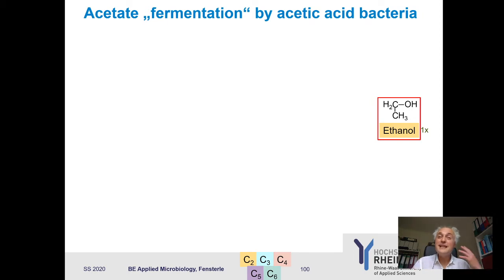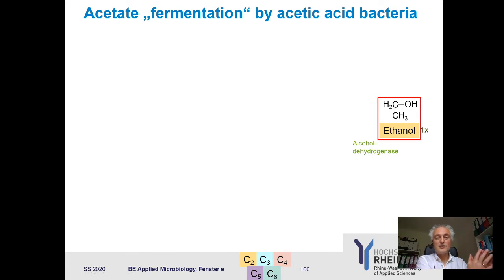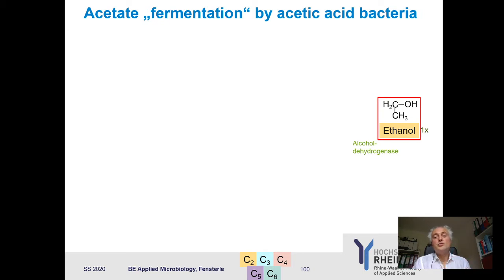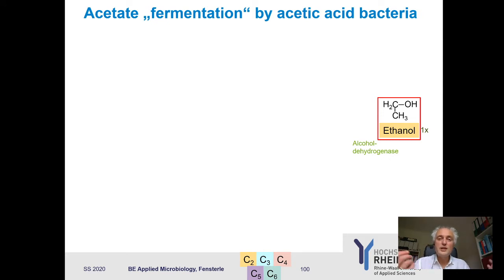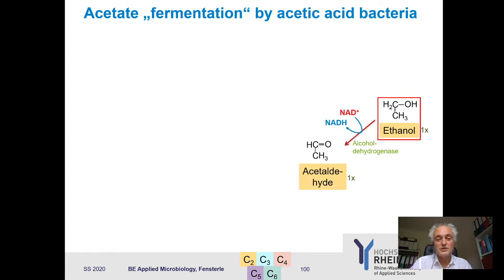What is happening there? You remember the production of ethanol in alcoholic fermentation — we had acetaldehyde which is reduced to ethanol. So the other way round: if we oxidize ethanol, we produce acetaldehyde. The enzyme is of course the same — alcohol dehydrogenase. So here we go: we have oxidized ethanol to acetaldehyde.